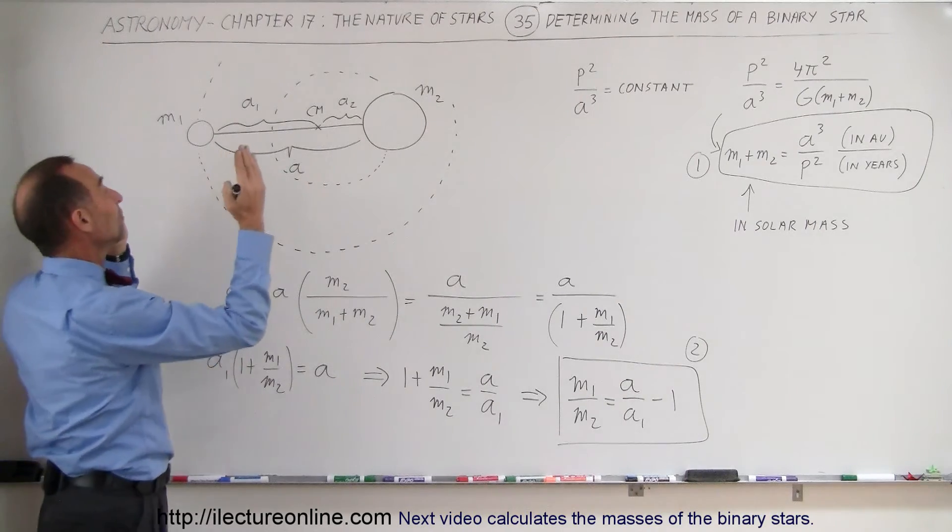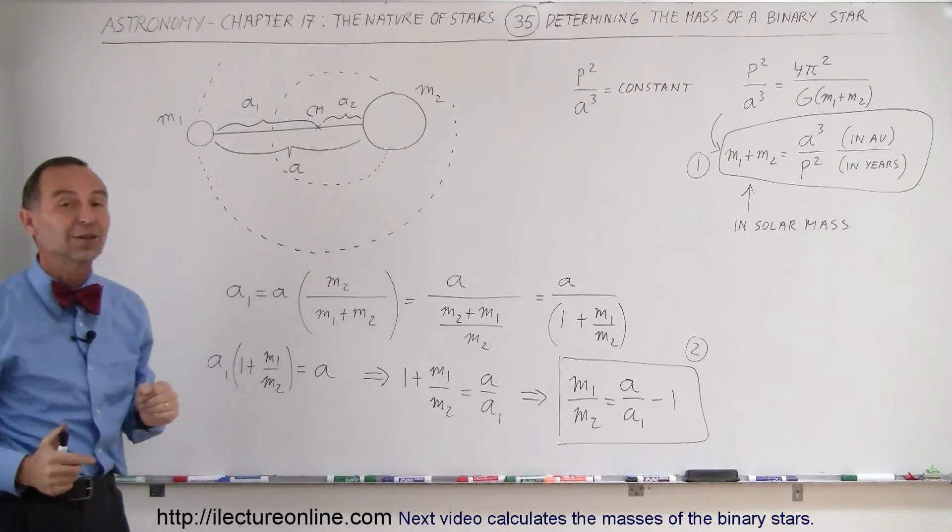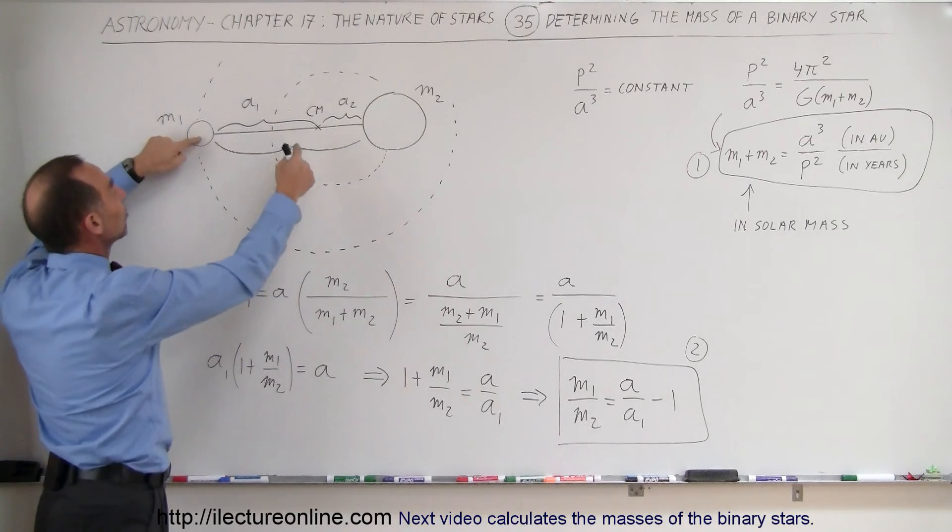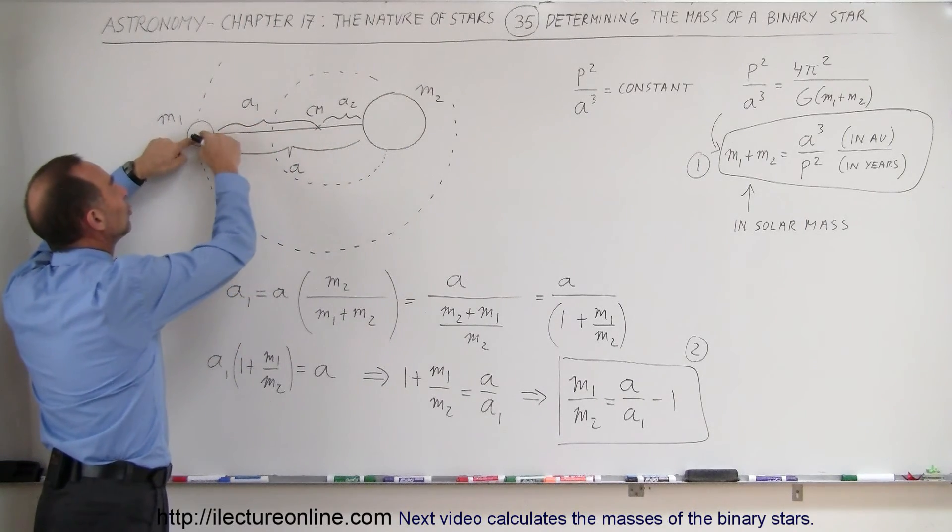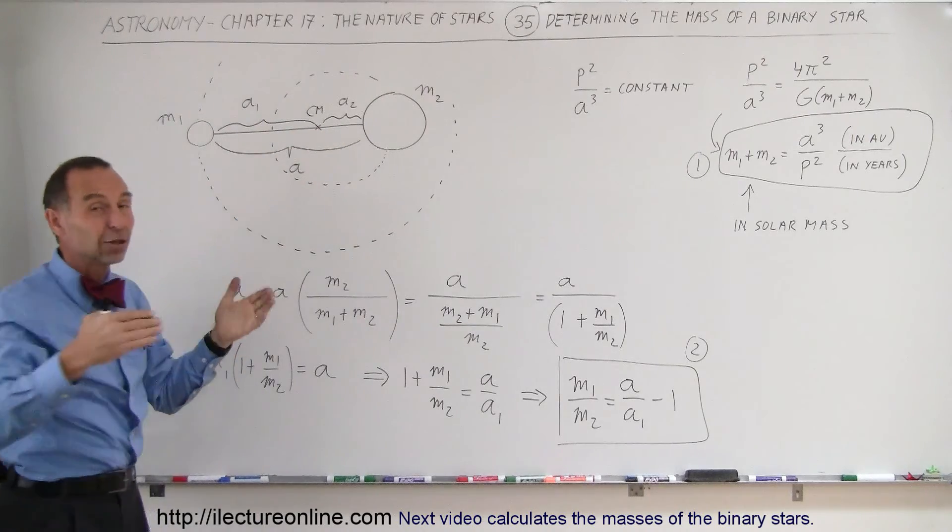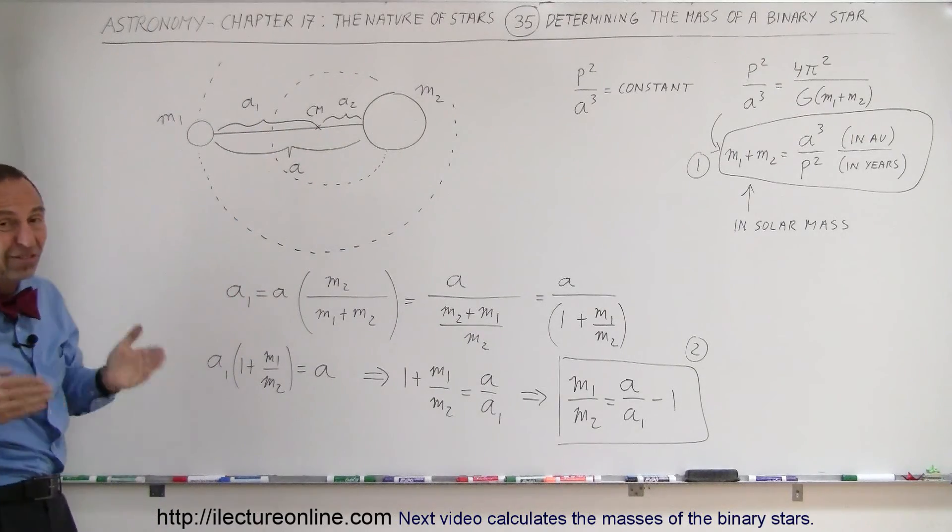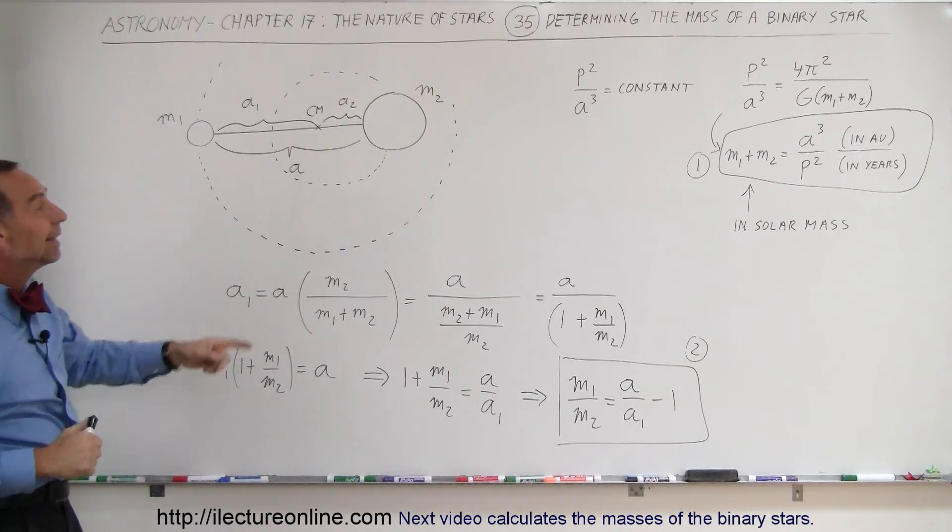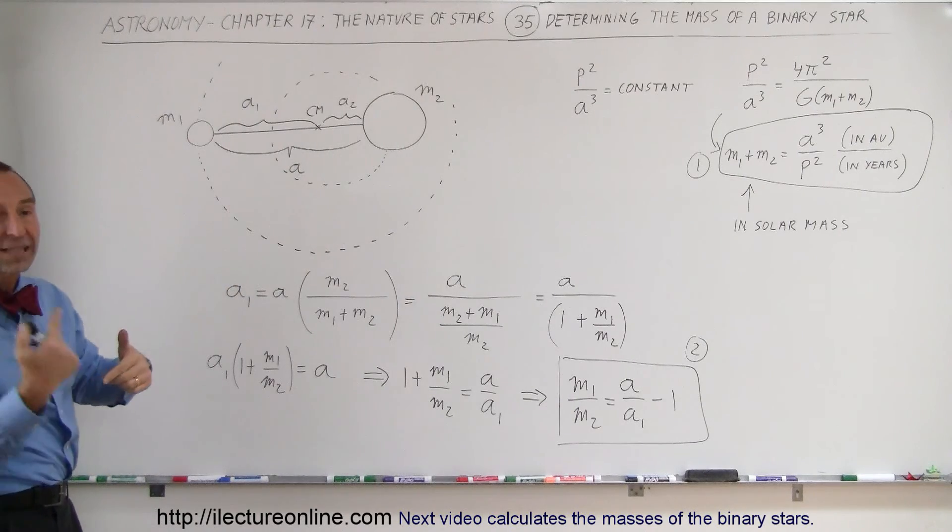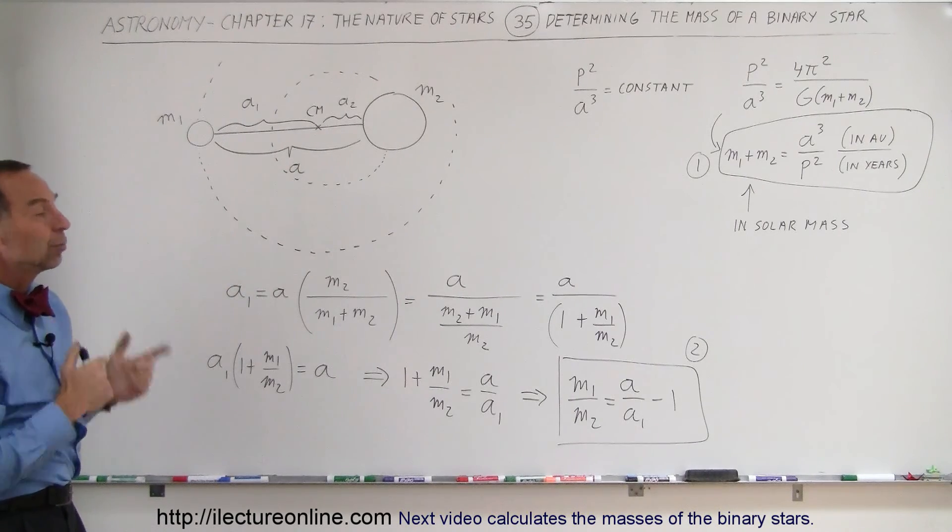It all depends upon how accurately we can measure the distance between the two stars and how accurately we can measure the distance from the center of mass to the small star. Usually we like to take the larger distance because the larger the distance, the easier it is to measure.